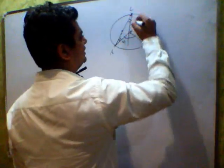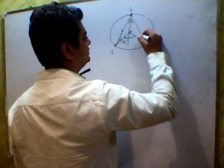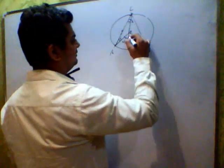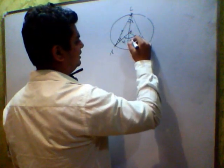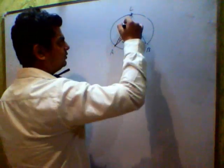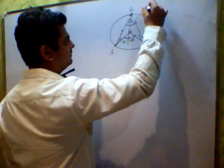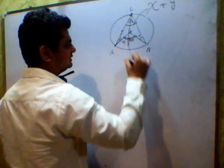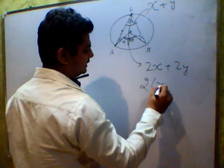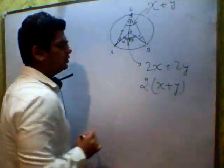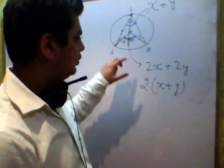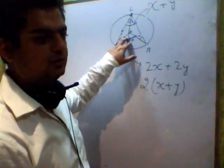Similarly, the two base angles of triangle OBC are equal — let each be x degrees — since OBC is also an isosceles triangle. The exterior angle at O for this triangle is 2x degrees. Now, the angle at the circumference point is x plus y, and the angle at the center is 2x plus 2y, which equals 2 times (x plus y). So the center angle is twice the circumference angle.